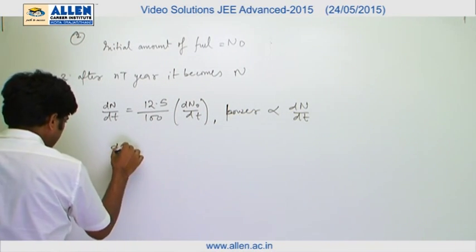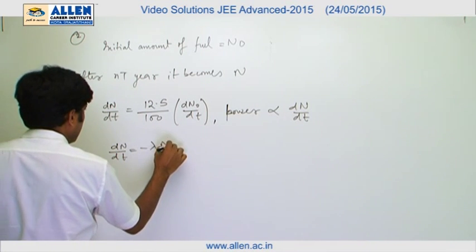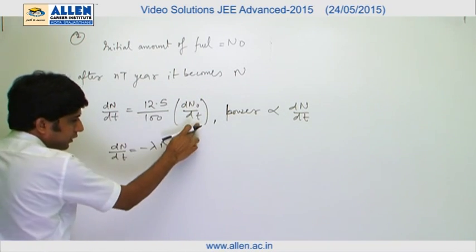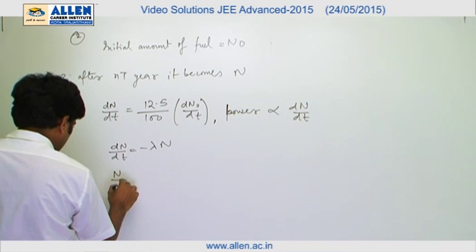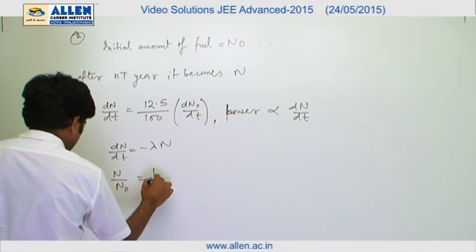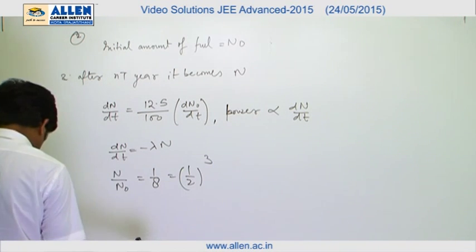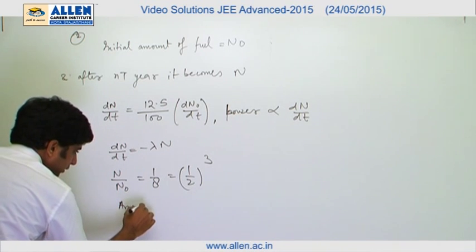Now again dN/dt equals to minus lambda N. Therefore, the ratio of dN/dt and dN naught/dt will be same as the ratio of N and N naught. That means N upon N naught equals to 1 by 8, or 1 by 2 to the power 3. Therefore, the required time is 3 half lives. Therefore, answer is 3T.